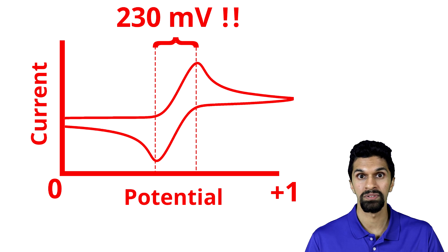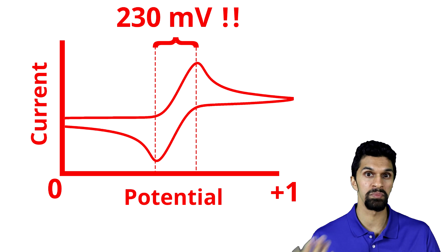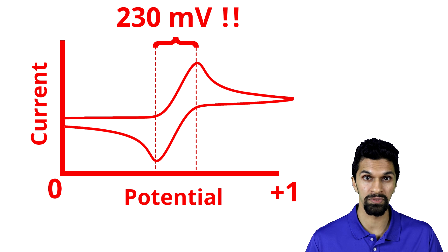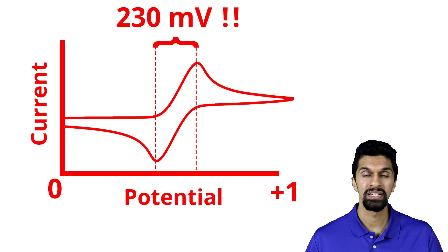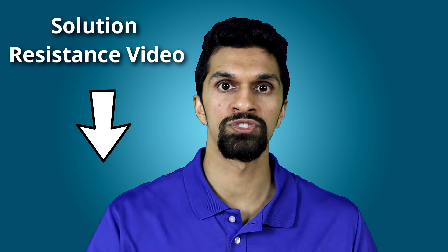That is one reason why an IR compensation circuit is very important — and also why if you don't have one and you have a lot of solution resistance in your system, it's very difficult to accurately measure the redox potential in your cyclic voltammogram. To use IR compensation with a potentiostat that has an IR compensation circuit, you need to adjust the multiplier based on the solution resistance. In our case the solution resistance was 300 ohms, but if you don't know what it is, you need to determine it. In our next video, we'll talk about several techniques you can use to determine the solution resistance — link is in the description below.